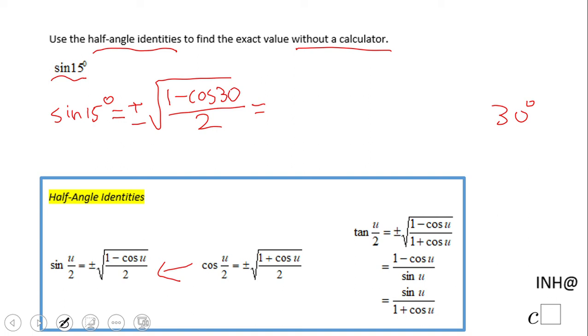Since this is 15, which is in the first quadrant, right, we are not going to need a minus. We're going to keep only the positive.